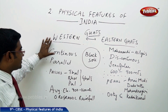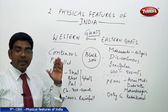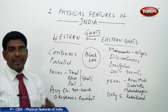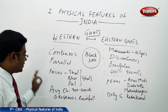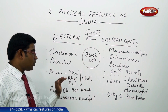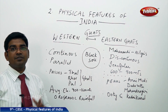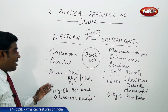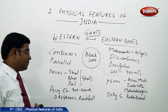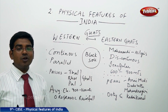Now let us discuss the Western Ghats. The Western Ghats run parallel to the western coast and they are continuous. At very few places we have small gaps, known as passes. There are only three main passes: Talghat, Bhorghat, and Palghat. The average height of the Western Ghats is 900 to 1600 meters, and here we experience orographic rainfall.